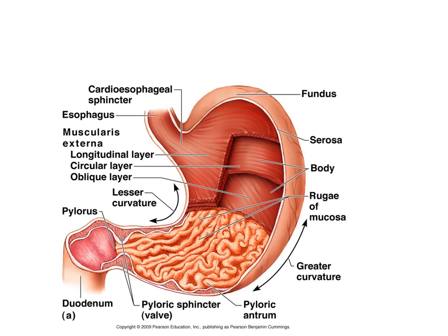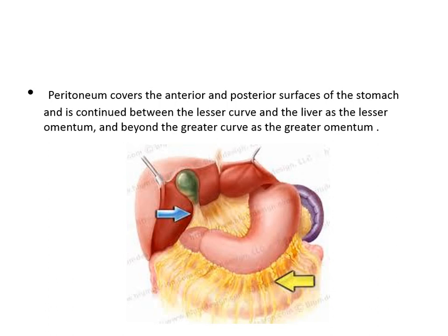The circular layer of the stomach muscle forms the pyloric sphincter. The oblique layer forms a narrowing at the esophagogastric junction and prevents reflux of food into the esophagus. The pylorus continues as the first part of the duodenum. The stomach is an intraperitoneal organ, fully lined by peritoneum. On the lesser curve, the lesser omentum attaches it to the liver; along the greater curve is the greater omentum. The first part of the duodenum is also intraperitoneal.